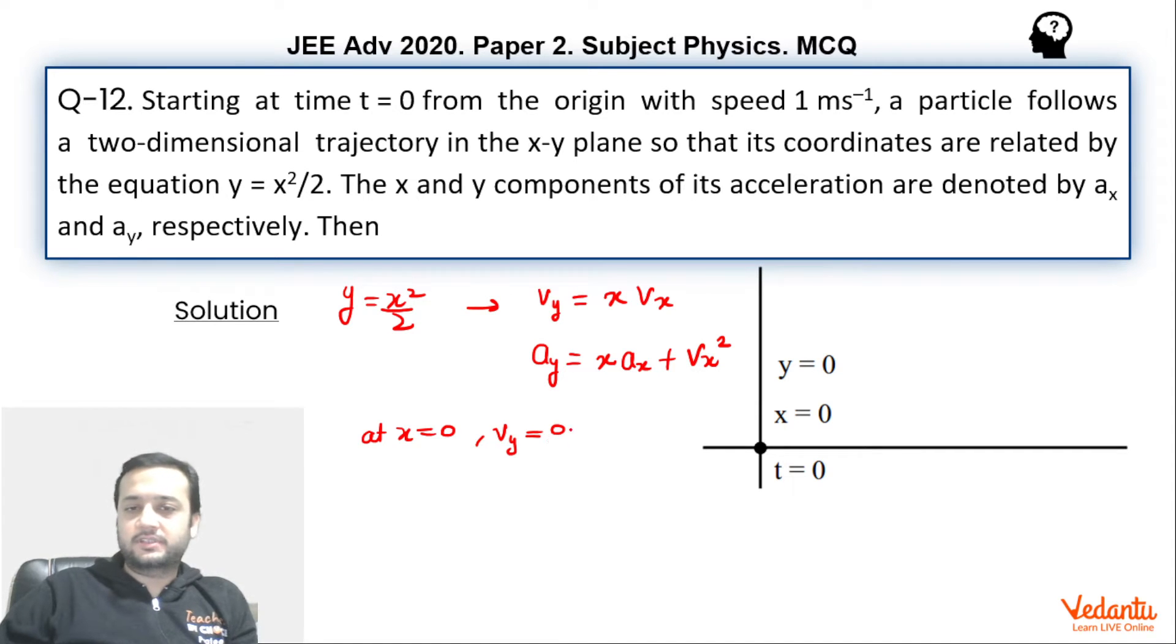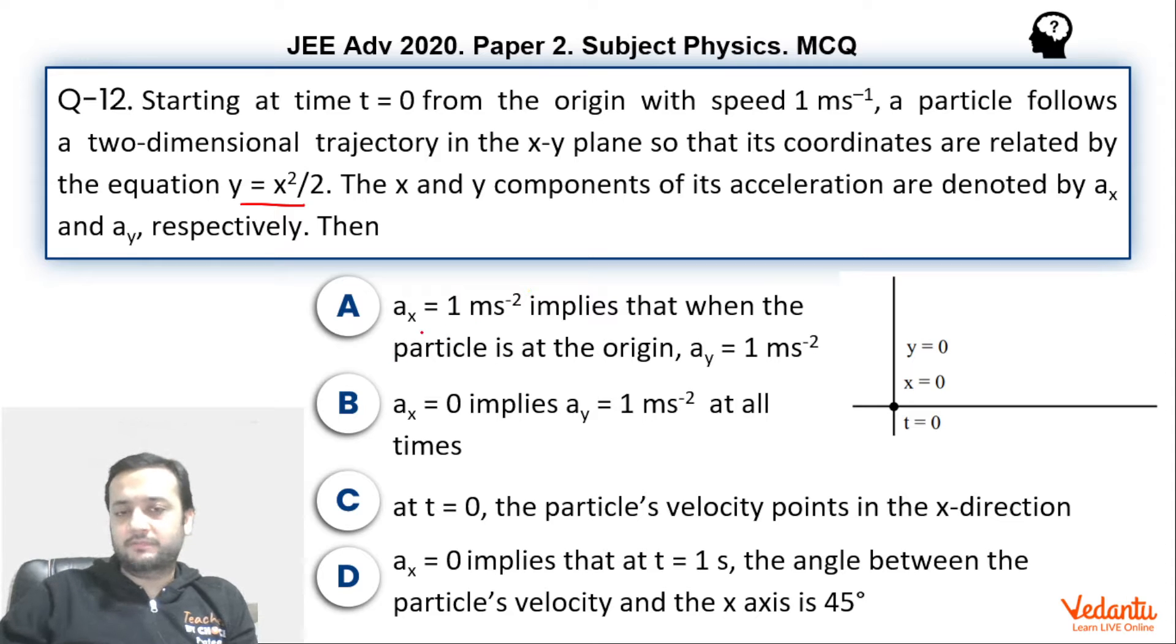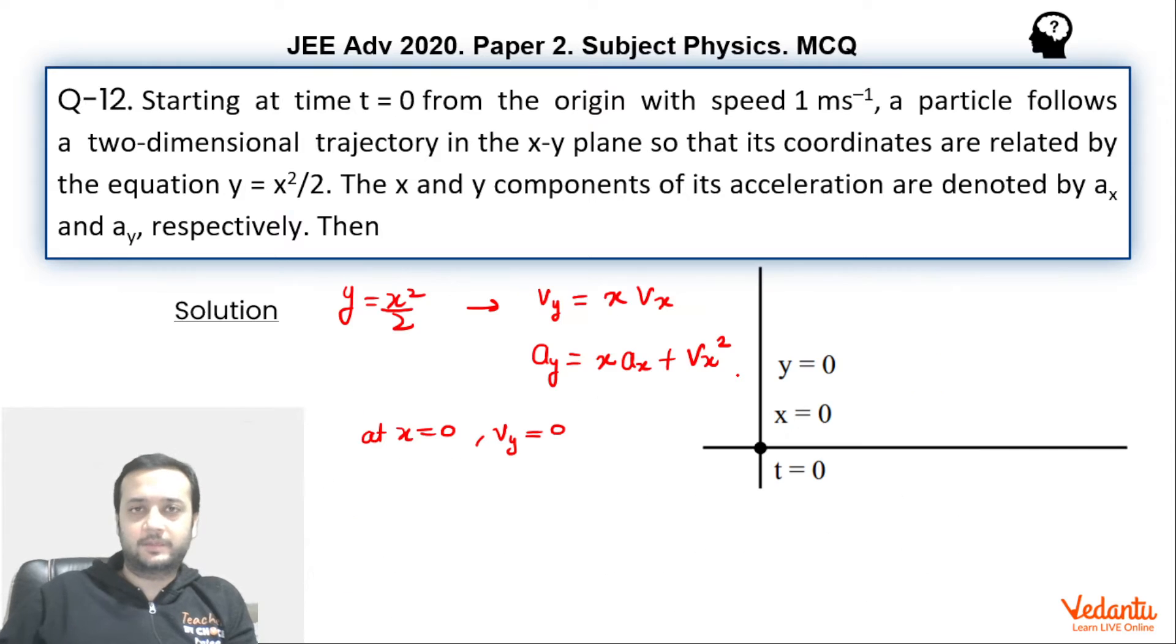So since vy was 0, we can say that if you go back to option 1, ax equals to 1 implies that when the particle is at origin ay will be equals to 1 meter per second squared. So since vy is 0, we can say that vx will become 1.